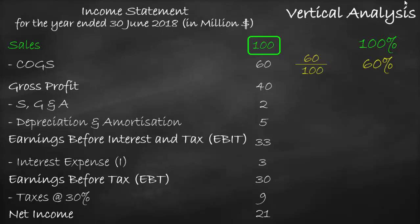To get a vertical analysis of gross profit, we divide gross profit of $40 million by sales of $100 million, which equals 40%. And so on for each item in the income statement.